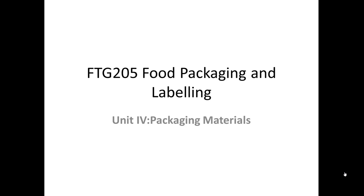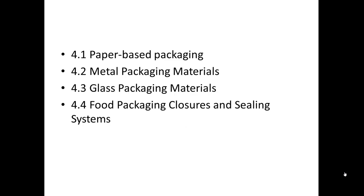Hello students. Today I'm going to start the fourth unit of the module Food Packaging and Labeling. The title of the unit is Packaging Material. Under this heading there are four subparts: paper-based packaging material, metal packaging material, glass packaging material, and food packaging closures and sealing systems. In today's lecture I'll talk about only one part — paper-based packaging material.